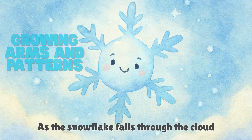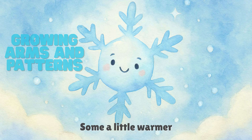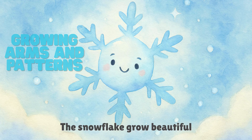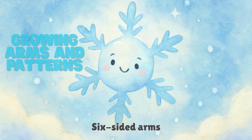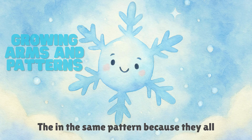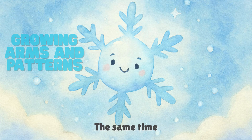As the snowflake falls through the cloud, it passes through different layers of air — some a little warmer, some a little colder. This changing temperature helps the snowflake grow beautiful six-sided arms. Each arm grows in the same pattern because they all experience the same air at the same time.